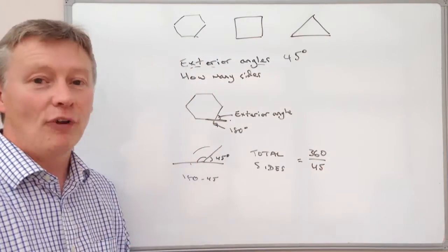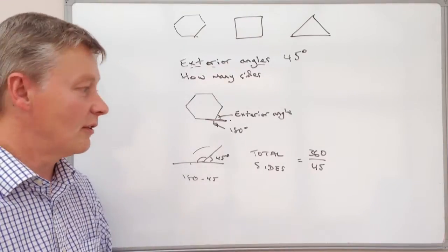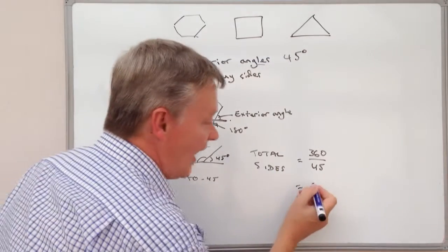It will tell you how many sides there are. If I divide 360 by 45, that's going to give us 8.